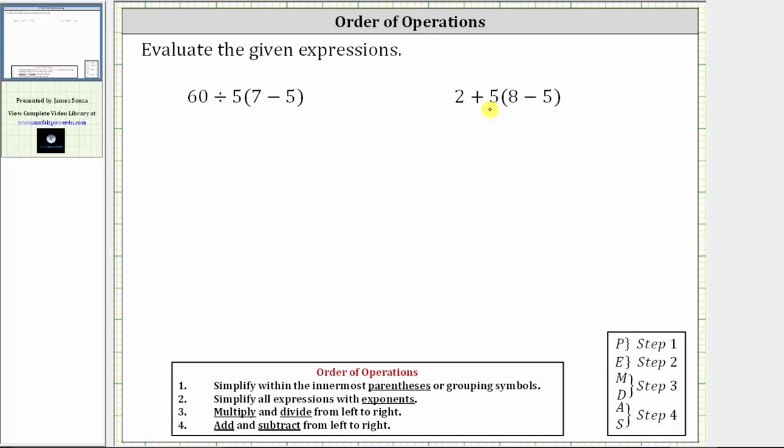In order to evaluate the given expressions, we must follow the order of operations shown below. Notice how there are four steps in the order of operations. The first step is to simplify within the innermost parentheses or grouping symbols.